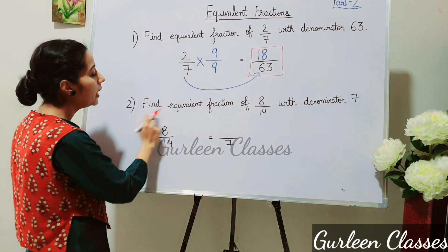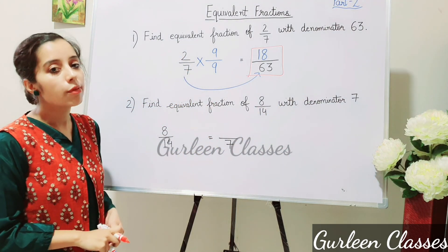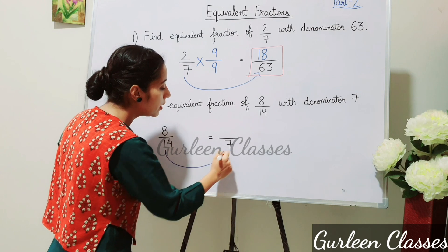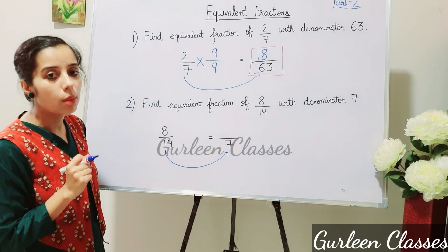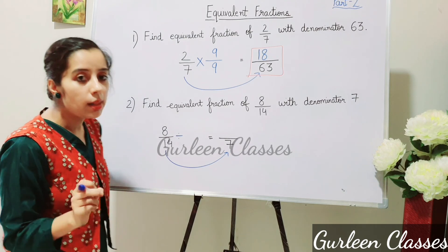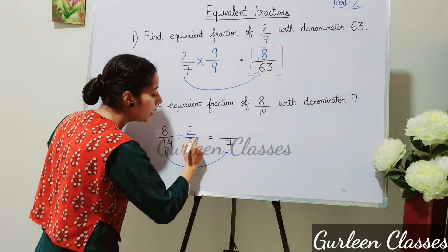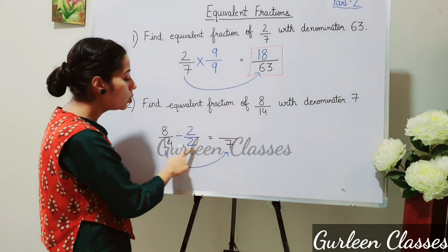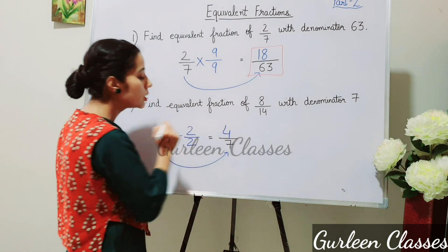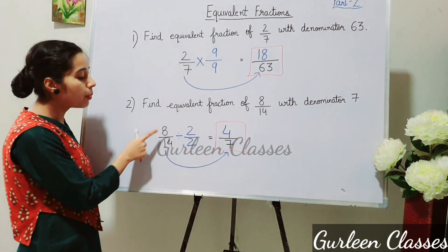Now the second part: find the equivalent fraction of 8/14 with denominator 7. The fraction is 8/14 and we need to make the denominator 7, which is smaller. So we divide. 14 ÷ 2 = 7, so divide numerator and denominator by 2. 8 ÷ 2 = 4. So 4/7 is the equivalent fraction of 8/14.